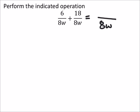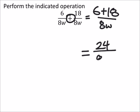Now I just need to add, by the way I'm adding because it says to add. So I have 6 plus 18. 6 plus 18 would be 24 over 8w.